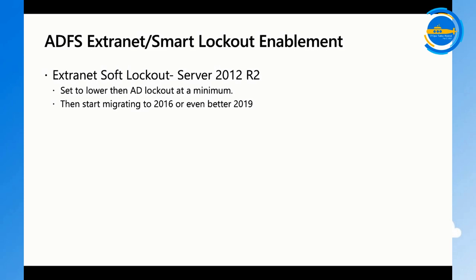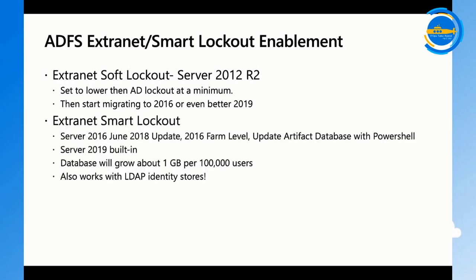If you're on 2016 or 2019, you get extranet smart lockout, which is built into 2019. On 2016, apply the required update, bring the farm to the 2016 level, then run a PowerShell command to update the Artifact database. Smart lockout tracks known IP addresses users log in from and blocks unknown IPs while allowing known ones. The database grows about one gigabyte per 100,000 users. It also works with LDAP identity stores in ADFS.